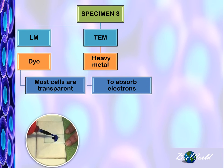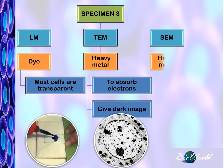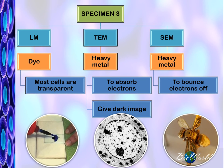we use heavy metals so that they can absorb the electrons and give us a darker image. The scanning electron microscope also needs specimens with heavy metal, but this time it is to enable the electrons to bounce off. For example, here you see a bee coated with gold to enable scanning electron microscope images to be developed.